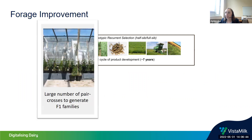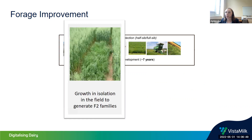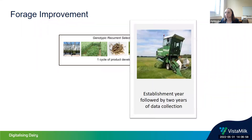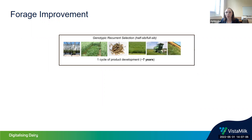You start the process with a large number of pair crosses to generate F1 families, then you grow your grass in isolation in the field to generate F2 families. Next you collect enough seed for a field trial, establish a trial, then collect data for two years. In total this brings you to seven years for one cycle of product development.